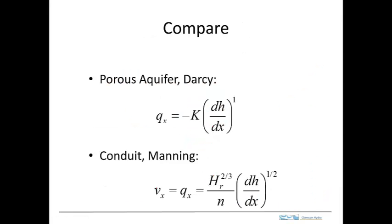We can compare Darcy's Law and Manning's Law. They both give us the flux. In the case of Manning's, the flux is also equal to the average velocity. The flux in a porous media is proportional to the head gradient and hydraulic conductivity is the proportionality. In a conduit or stream, the flux is proportional to the head gradient to the one-half power.